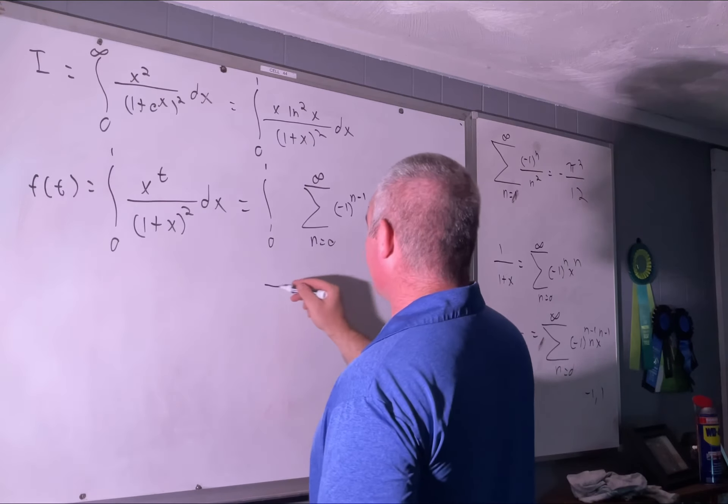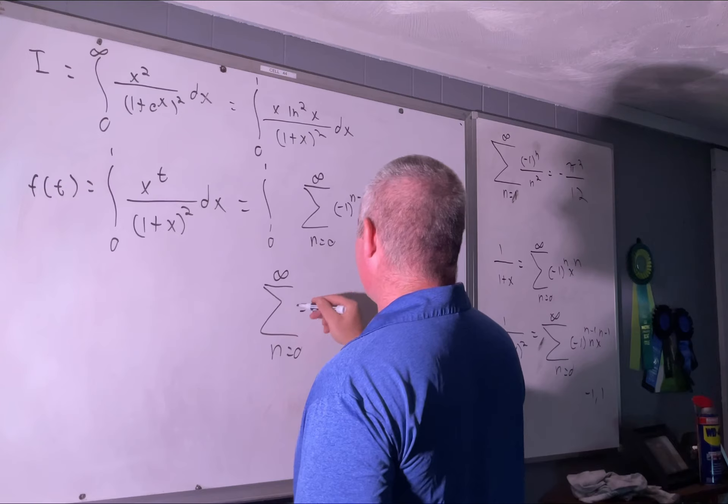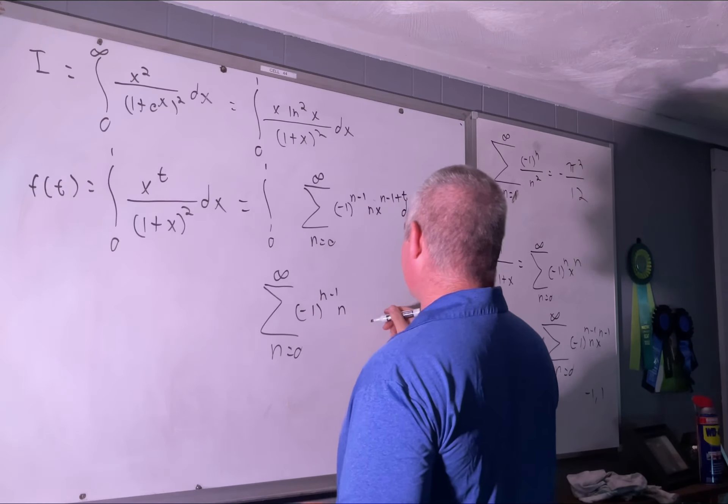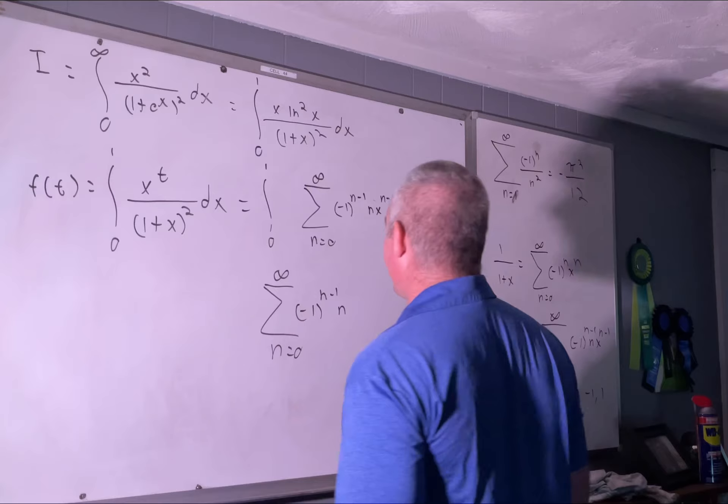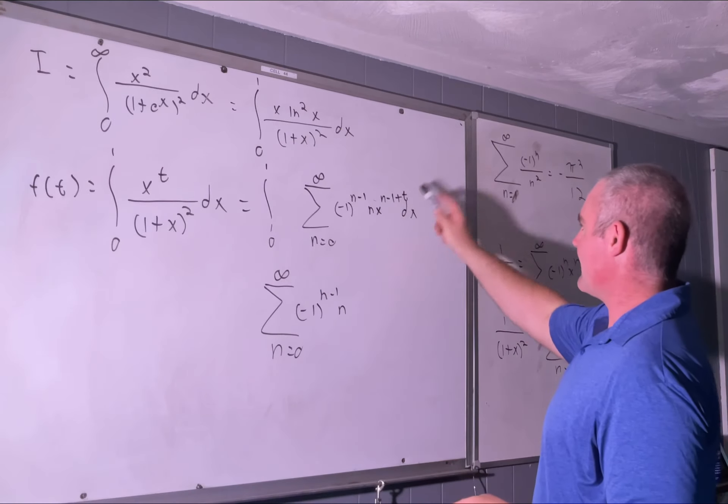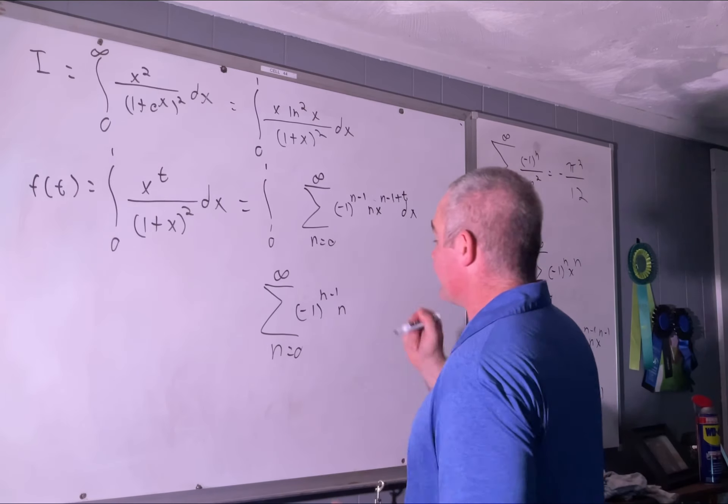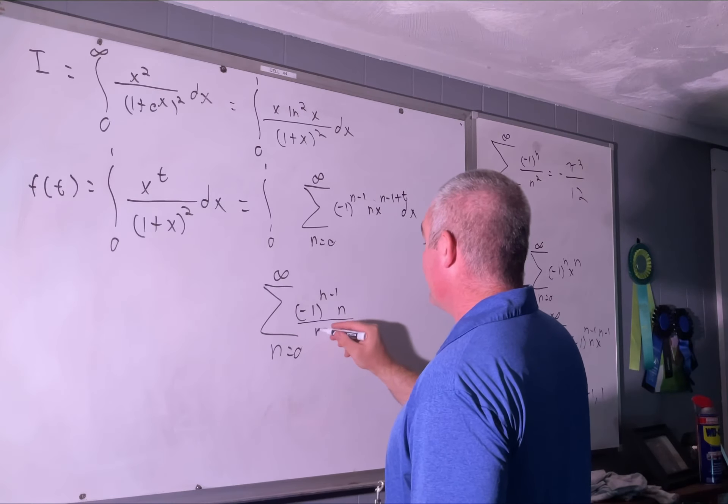We'll rearrange it a little bit. We'll make this the sum from 0 to infinity of (-1)^(n-1) times n, and then we'll have the integral from 0 to 1 of x^(n-1+t) dx, which is just going to be 1 over (n+t).